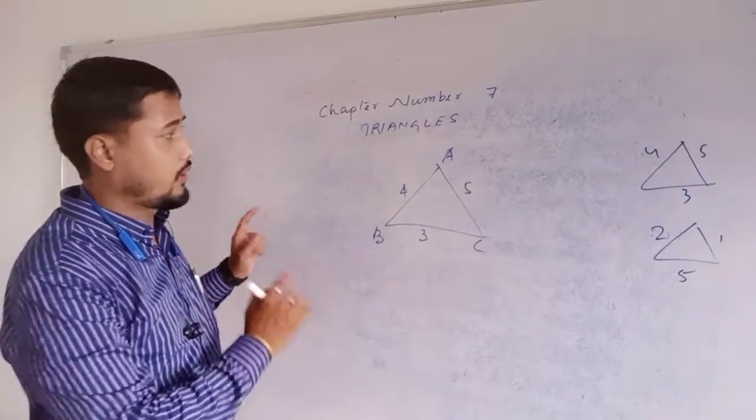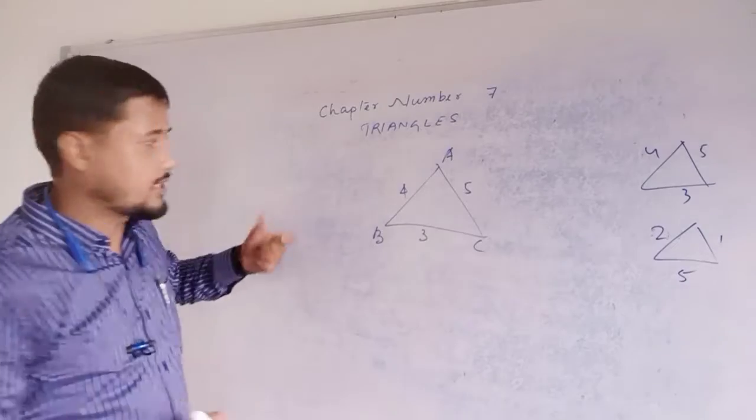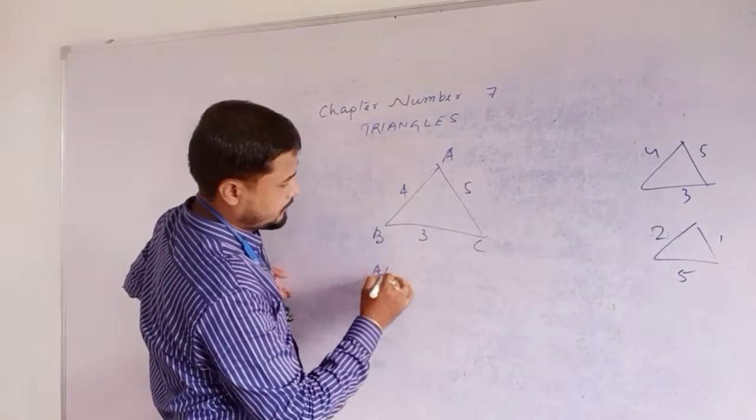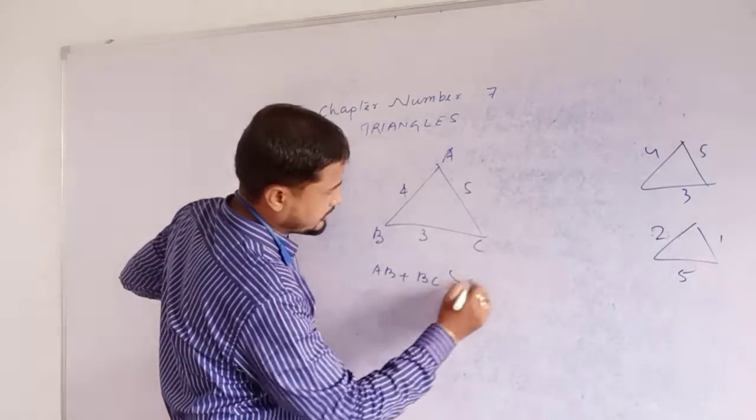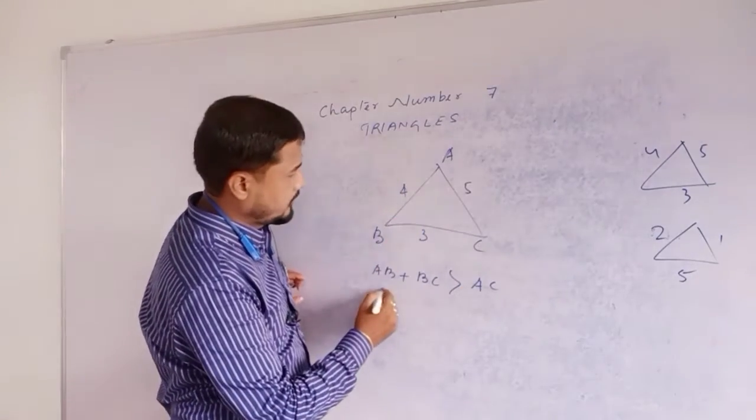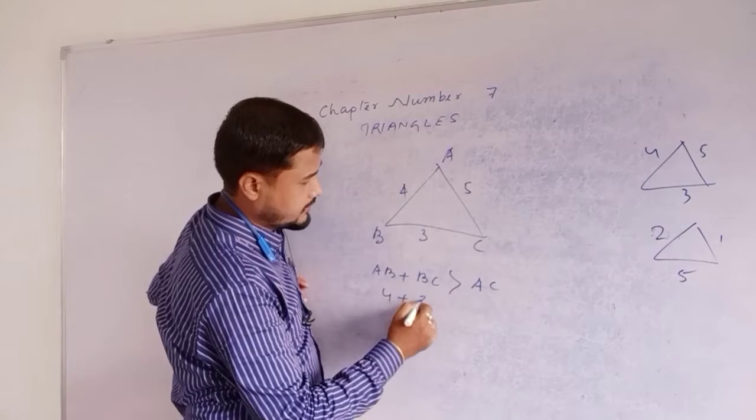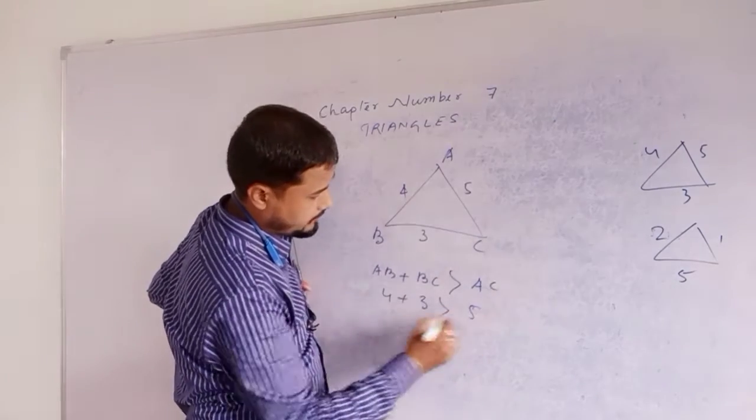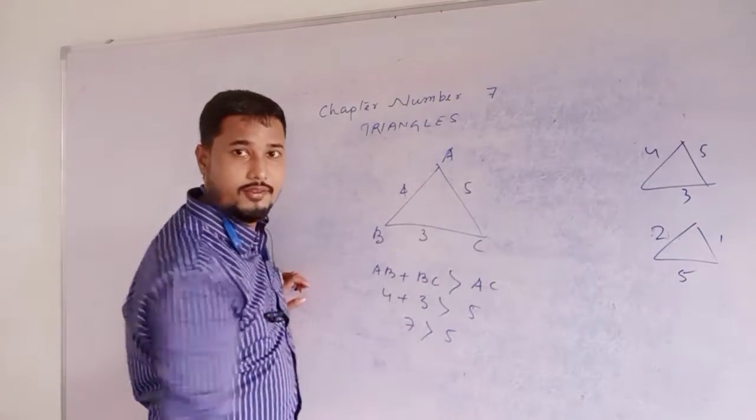Remember what I have said, the sum of two sides. Example, AB plus BC is greater than AC or not? Check it. What is the value of AB? It is 4. What is the value of BC? It is 3. What is the value of AC? It is 5. That is 7 greater than 5. Correct.